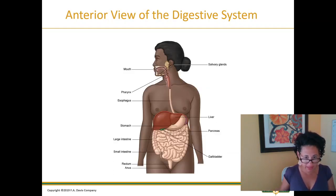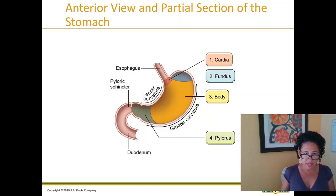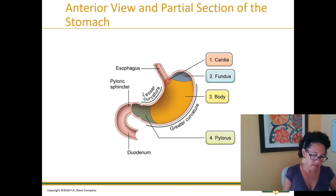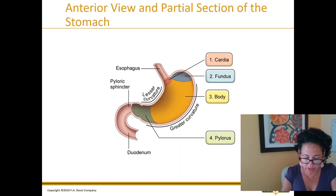That is the diagram I shared with you. So the anterior view and partial section of the stomach is a great way for you to see where — it's illustrated in your book as well. On page 613, figure 32.2, it's the parts of the stomach. This gives you a further illustration of just how digestion happens.